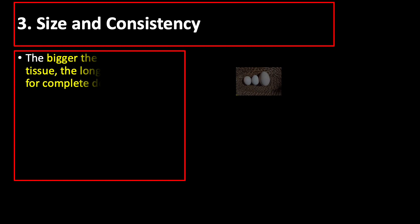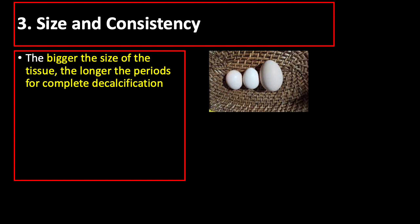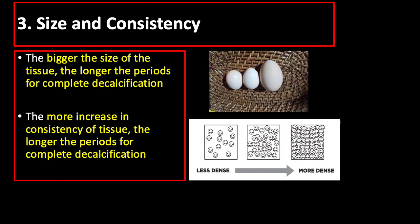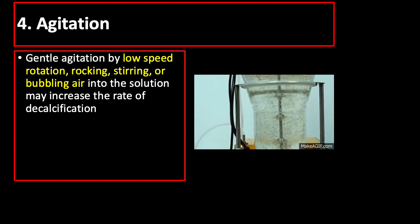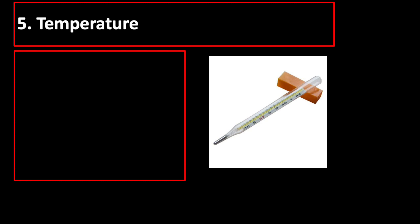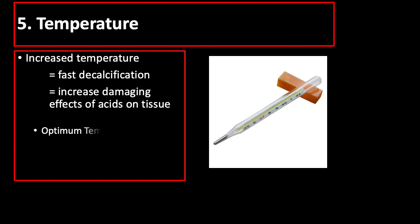For size and consistency, the generality is the bigger the size of the tissue, the longer the period for complete decalcification. For agitation, gentle agitation by low speed rotation, rocking, stirring, or bubbling air into the solution may increase the rate of decalcification. And lastly, temperature — increased temperature will hasten decalcification, but it will also increase the damaging effects of acids on tissue. The optimum temperature for decalcification is 18 to 30 degrees centigrade.